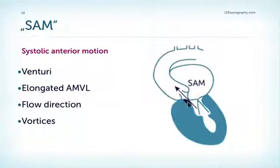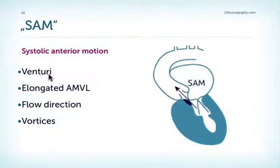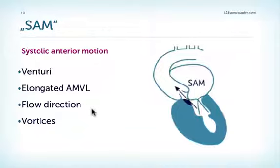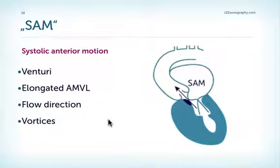Why do we have such a strange motion of the anterior leaflet? There are a number of explanations. One is the so-called Venturi phenomenon: we have a very narrow LVOT, causing elevated flow velocity, which creates suction on the anterior leaflet — the same principle by which airplanes fly. Another reason is that patients with hypertrophic cardiomyopathy often have fairly long mitral valve leaflets, predisposing them to obstruction. A further explanation is that septal bulging redirects flow behind the mitral leaflet, pushing it towards the LVOT septum. Vortices have also been proposed as an explanation.